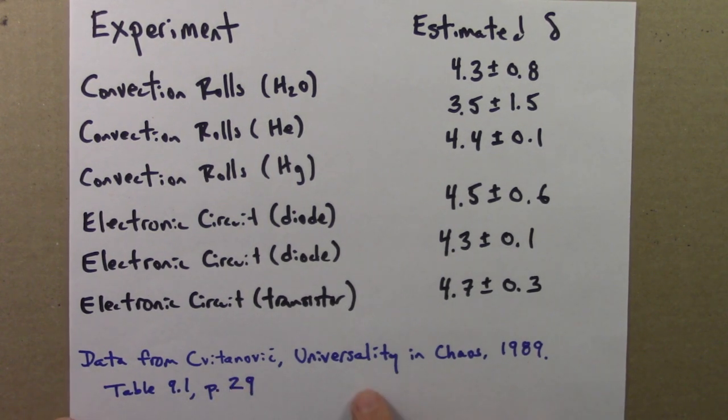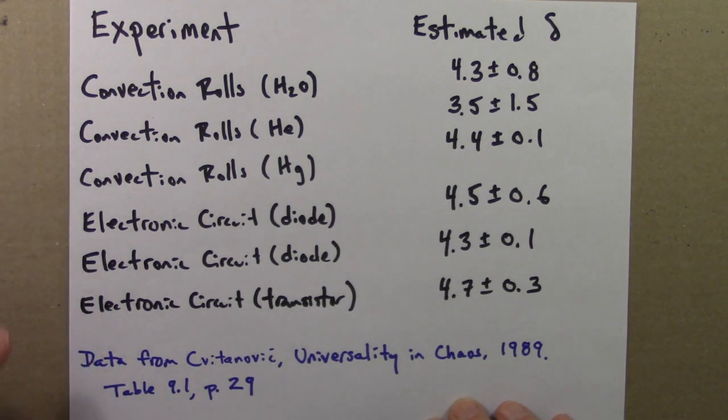This data is from a book by Predrag Cvitanović called Universality and Chaos. The full citation is in the extra or additional reading section for this unit. It's a volume with a few original papers, but mostly reprinted papers, some of the really important papers establishing universality and chaos. So there's a table in that book that summarizes these six experiments and probably about a half dozen more, and gives the citation to the original experimental work there.